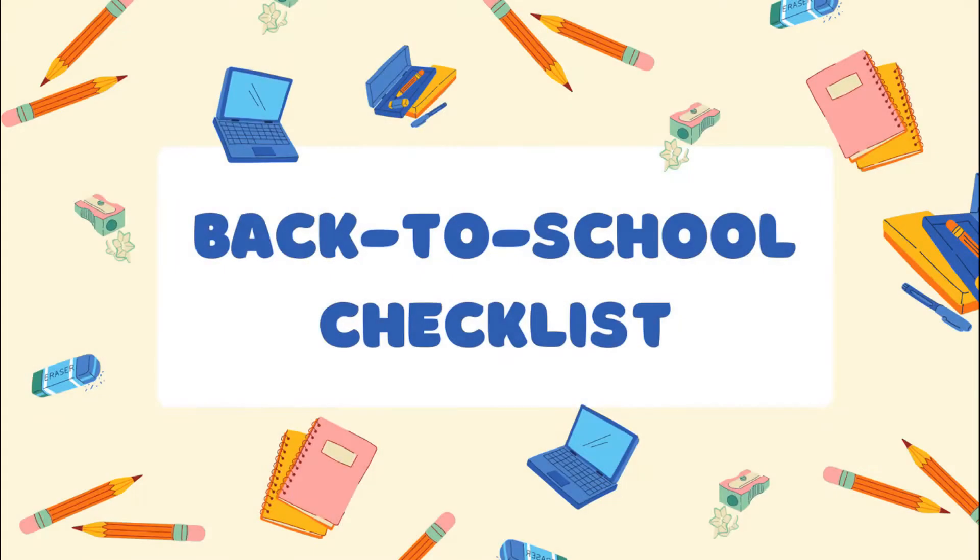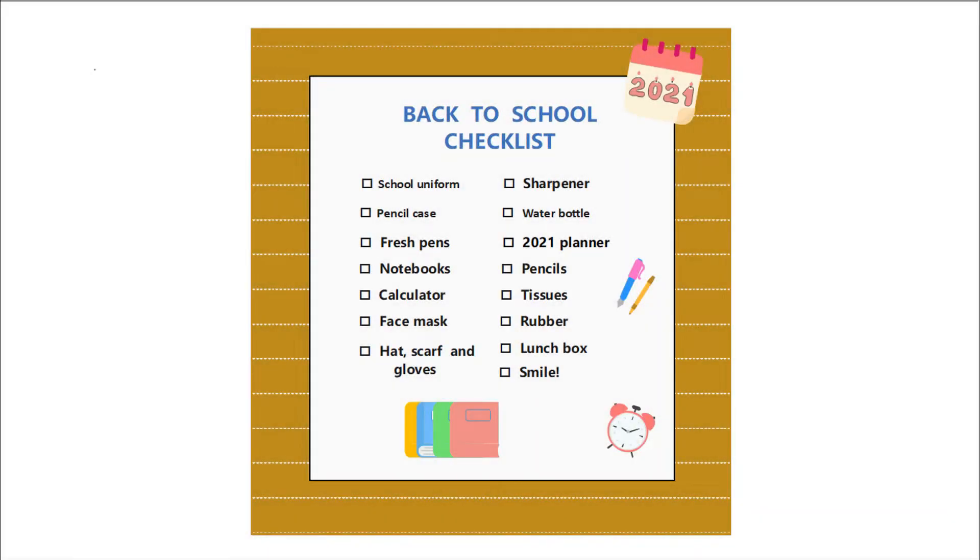Let's begin with a back-to-school checklist. Back to school is a reference to the fact that most schools are in session for two main semesters, fall and spring, and the majority of students take a summer vacation.